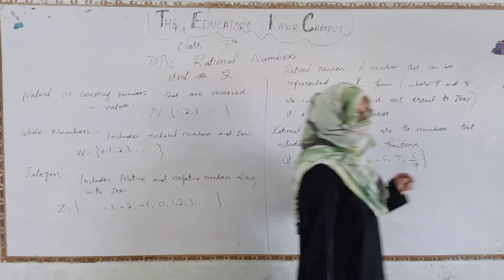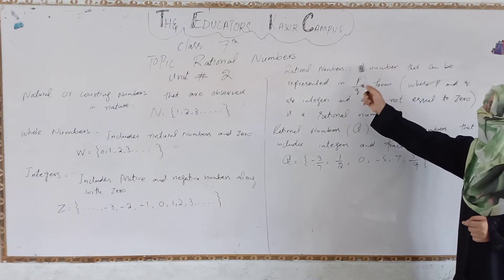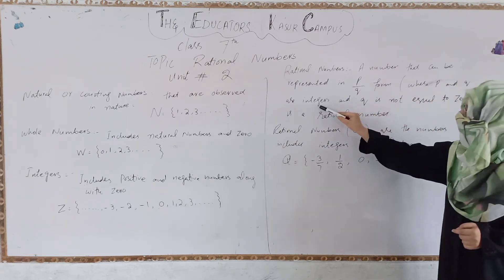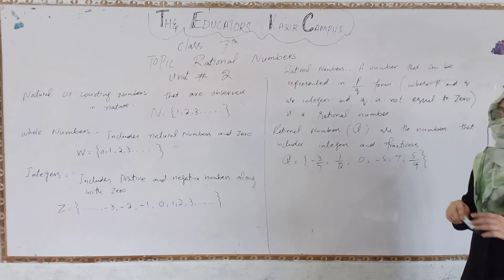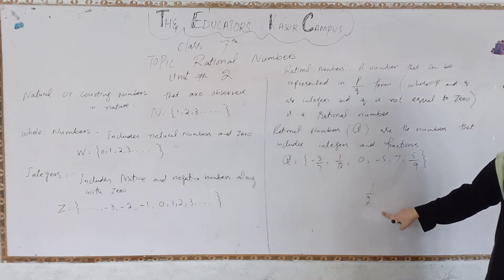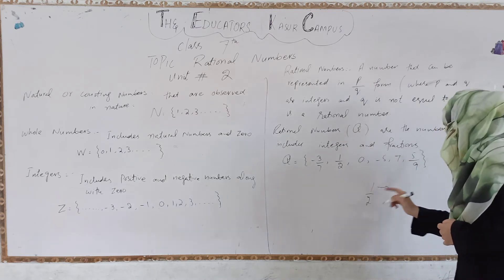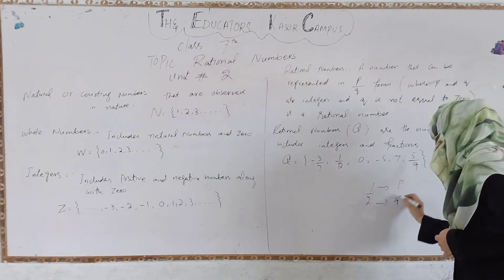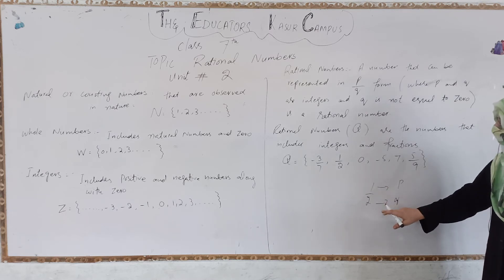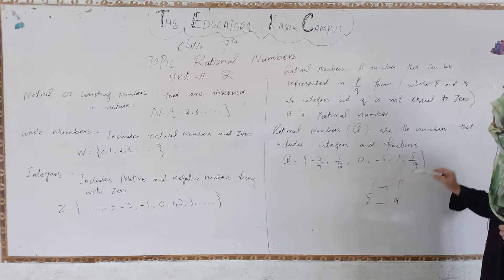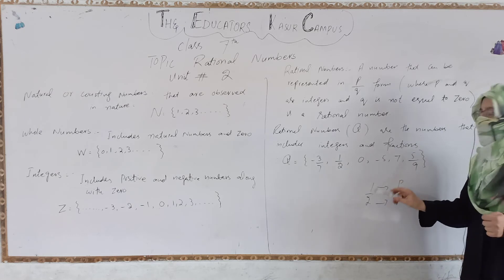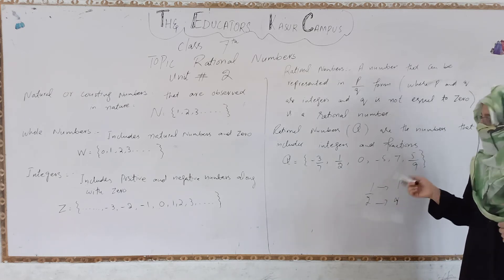Now we come to rational numbers. Rational numbers are numbers that can be presented in P over Q form, where P and Q are integers and Q is not equal to zero. This means we have a number in fraction form. For example, we have 1 over 2. Here 1 is P and 2 is Q, and both P and Q are integers, including negative and positive numbers.